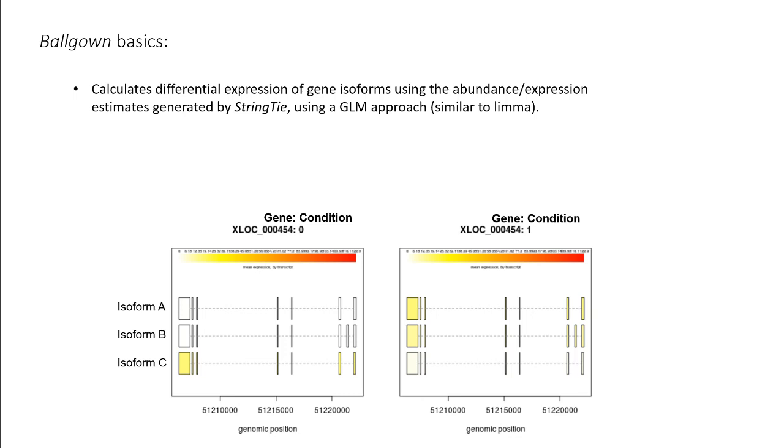Ballgown is an R package that was specifically designed to perform statistical comparisons between transcript abundances calculated by StringTie. Its underlying model uses a general linear model approach similar to limma.